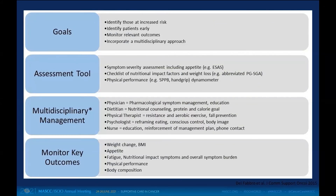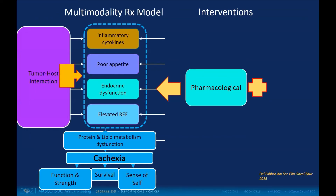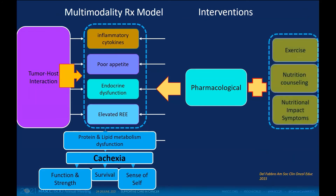Our goals are to identify patients at risk — for example, those identified on a screening tool such as the MUST tool — and then to assess them. Management involves multimodality treatment, which is likely key in patients with cachexia. Along with exercise, nutritional counseling, and addressing nutritional impact symptoms, any pharmacological therapy should be combined with these approaches.